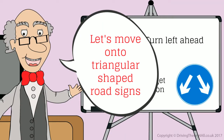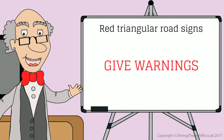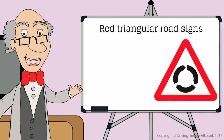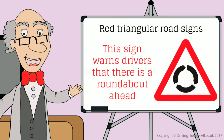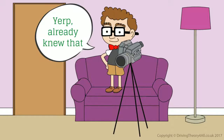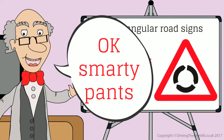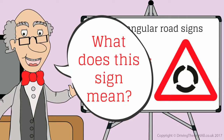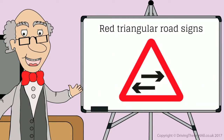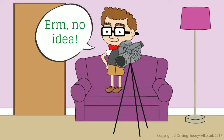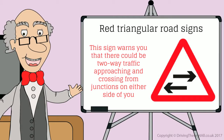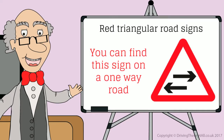Let's move on to triangular shaped road signs. Red triangular road signs give warnings. This sign warns drivers that there is a roundabout ahead. Yep, already knew that. OK, smarty pants — what does this sign mean? No idea. This sign warns you that there could be two-way traffic approaching and crossing from junctions on either side of you. You can find this sign on a one-way road.